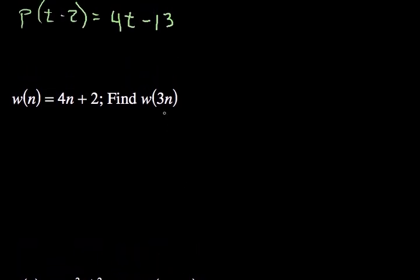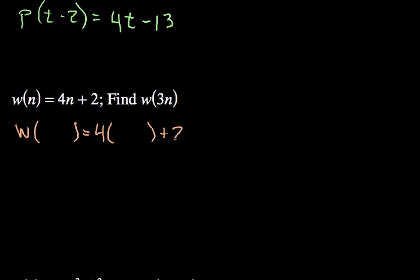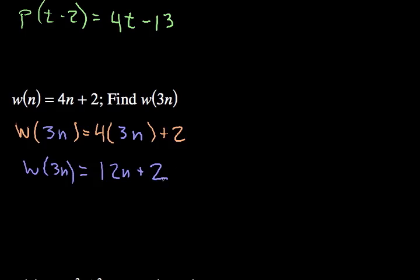Next example: w of n equals 4n plus 2, and we're going to find w of 3n. Again, I'll copy the original function leaving blank parentheses everywhere I see n: 4 times open parentheses, plus 2. Our input is 3n, so I put 3n in every blank. This is just a monomial, not the distributive property: 4 times 3n is 12n plus 2. That's the final answer.